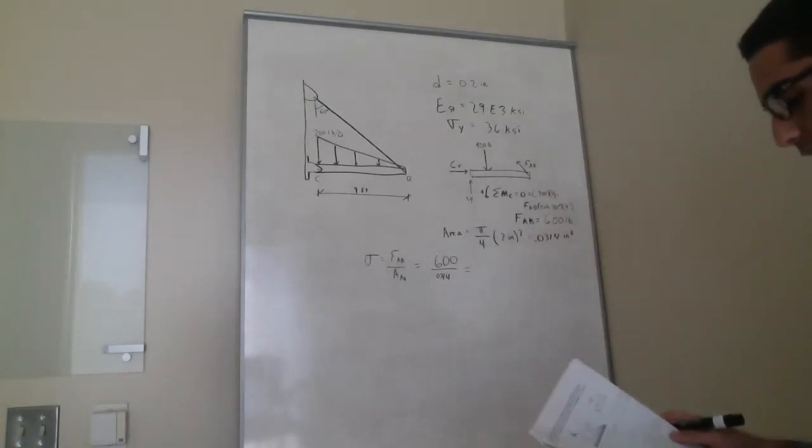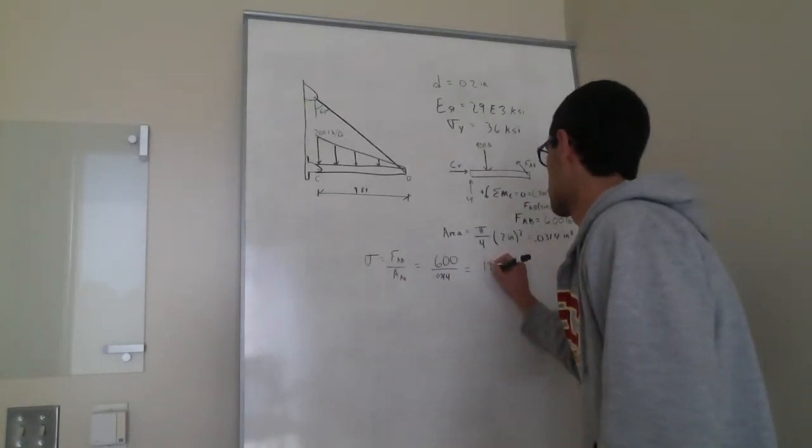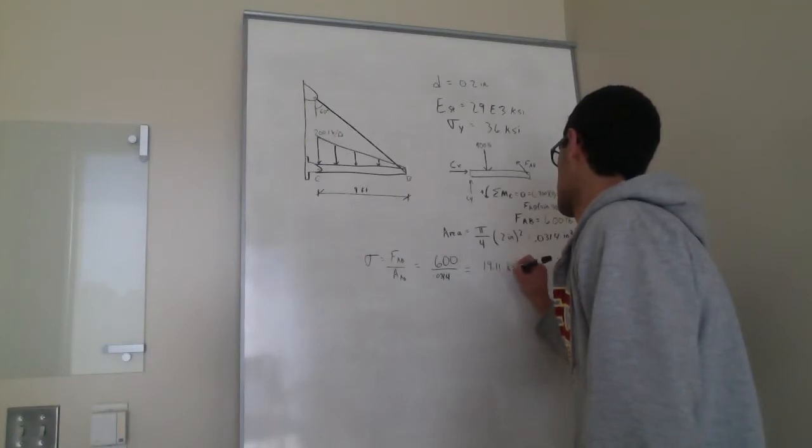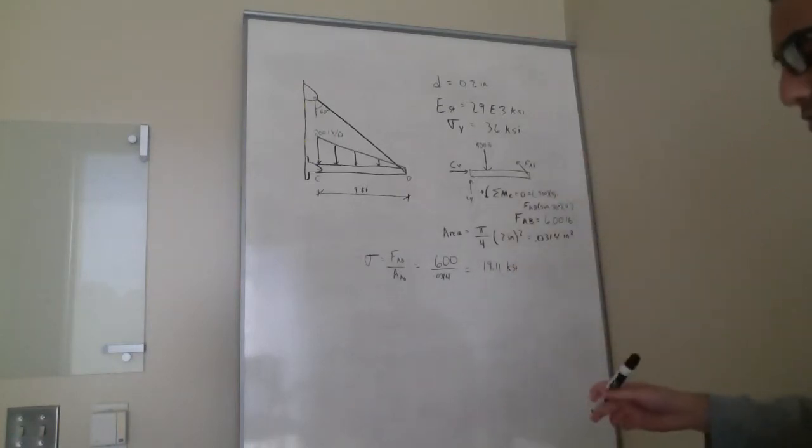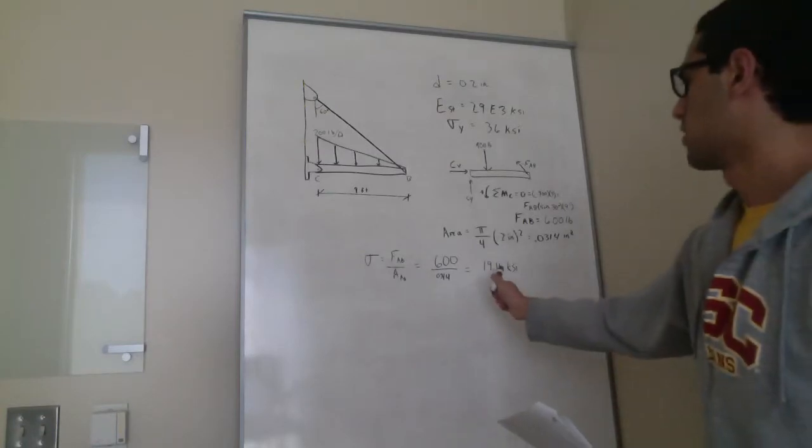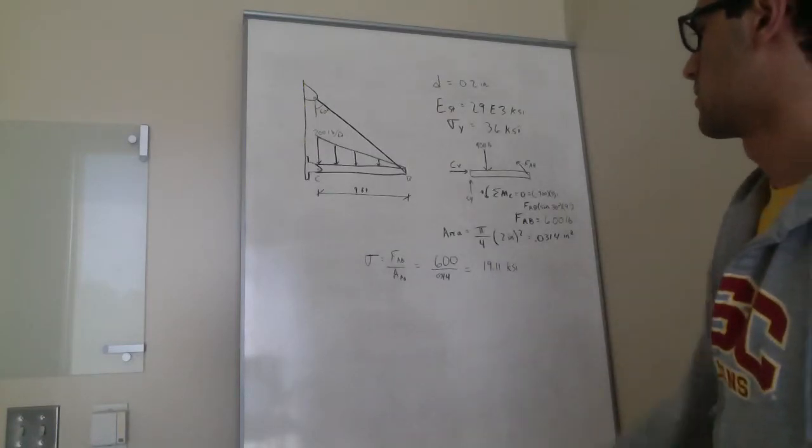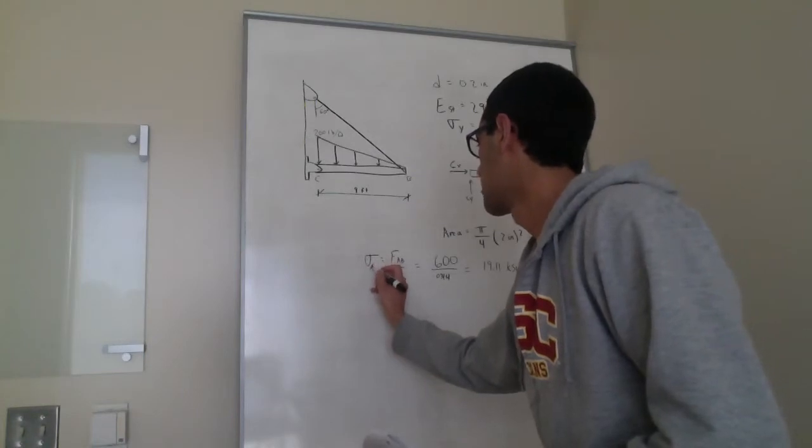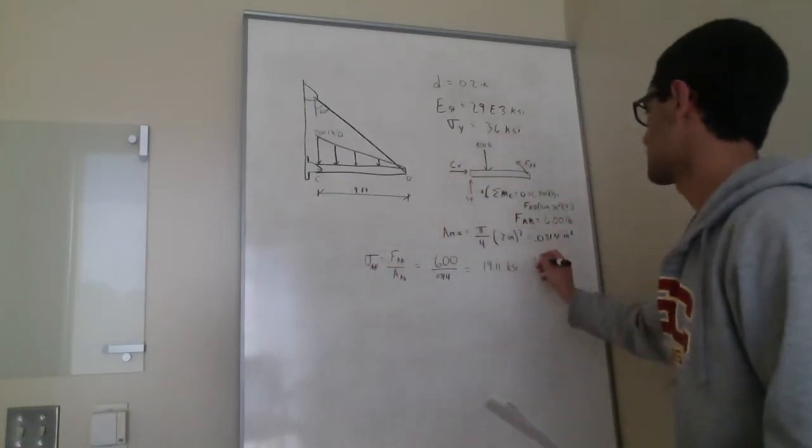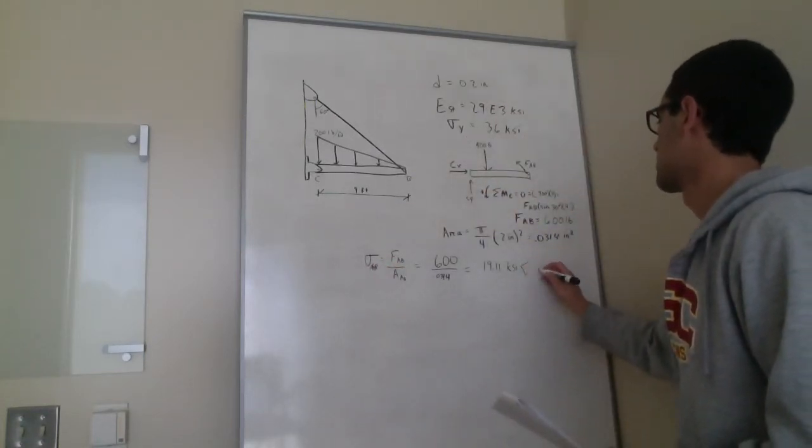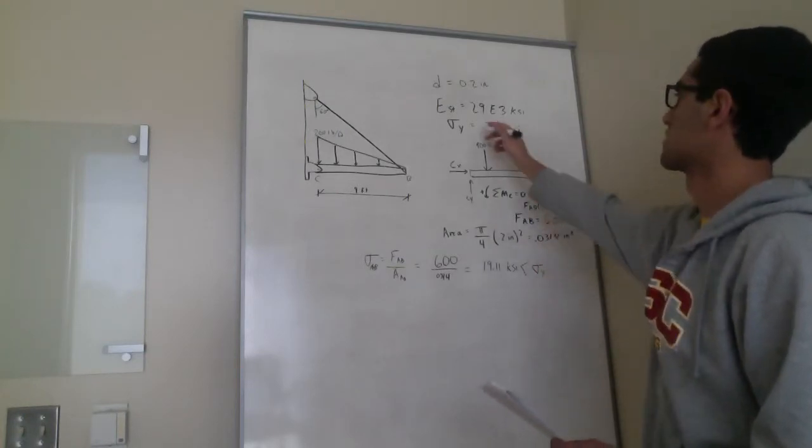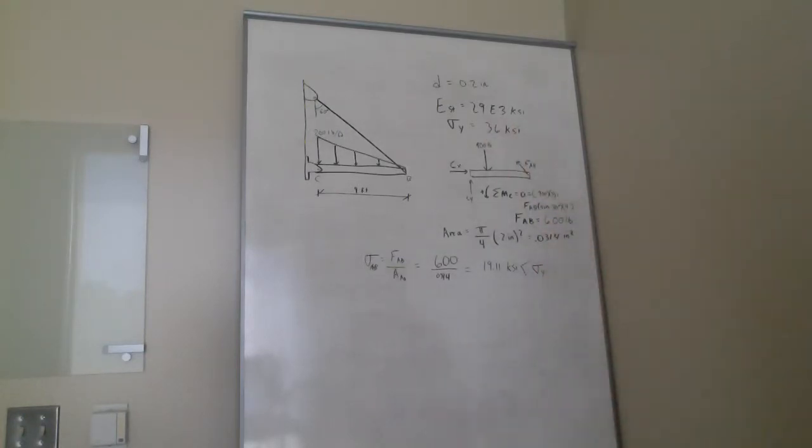Now if you notice the question has asked state if Hooke's law is applicable or not. Our sigma for AB is less than sigma yield 36 KSI, which means Hooke's law does apply. So it is linear elastic.